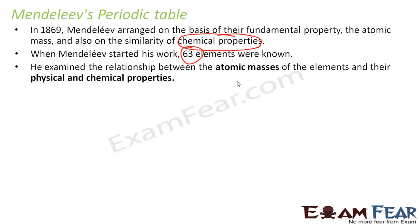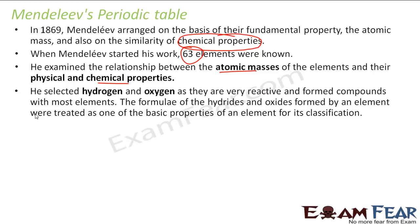He first tried to find the relation between atomic mass and the chemical and physical properties. To find the chemical properties relationship, he selected hydrogen and oxygen because they were very reactive and formed compounds with most of the elements.